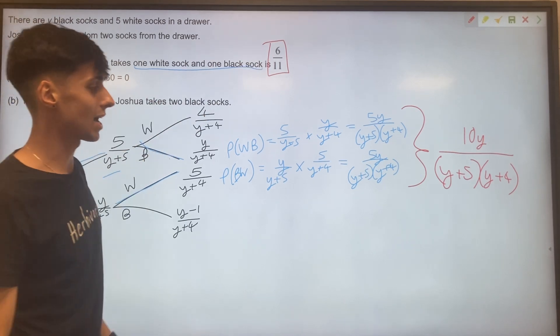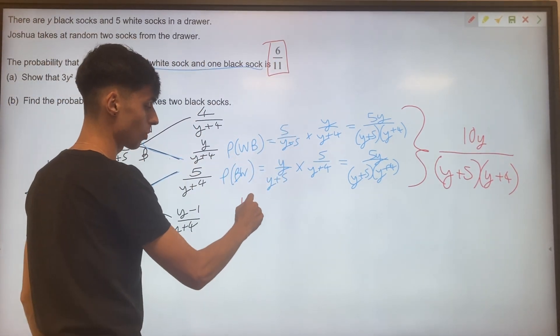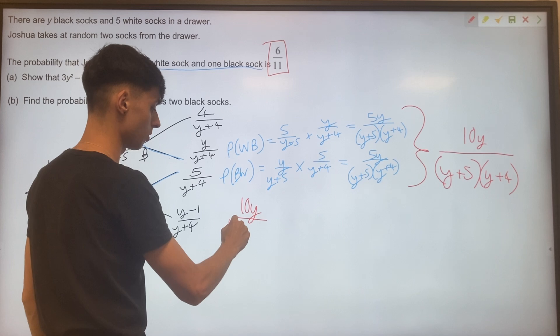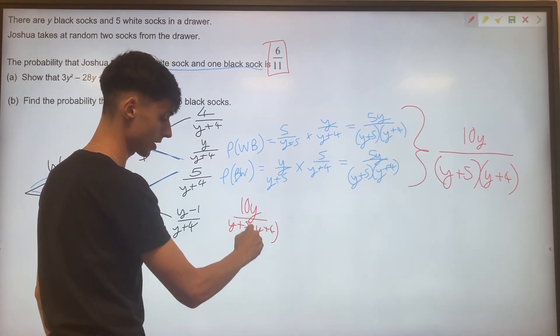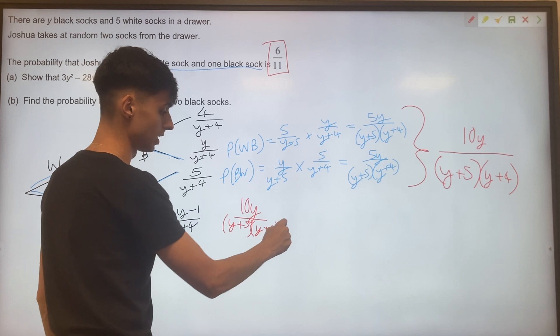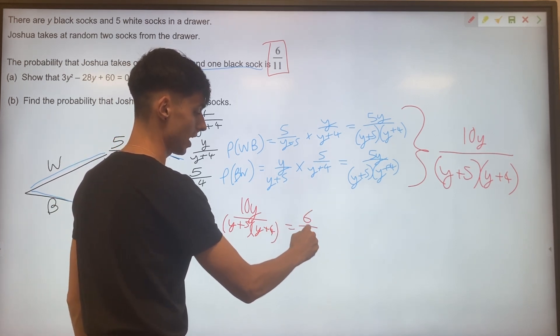So let's write down, we can do this down here, 10y over y plus 5 brackets y plus four, double brackets, equals 6 out of 11.